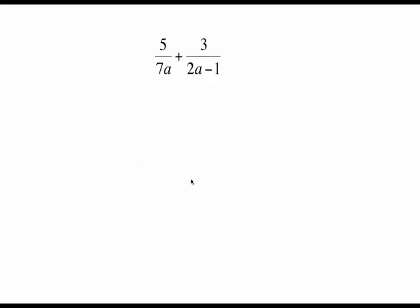Alright, this example has got a monomial denominator and a binomial denominator and sometimes students make a common mistake, thinking that a is somehow a common factor and it is not. 7a is a monomial, 2a minus 1 is a binomial. There is no common factor here. So we have to use our rule that says if there is no common factor between the two denominators, the common denominator is the product of the two denominators.